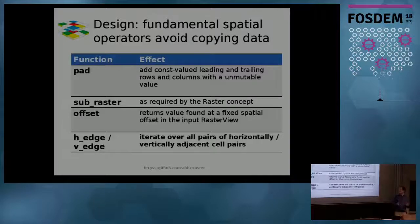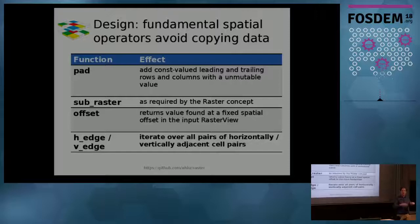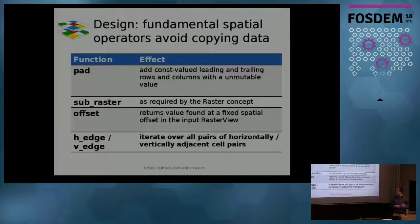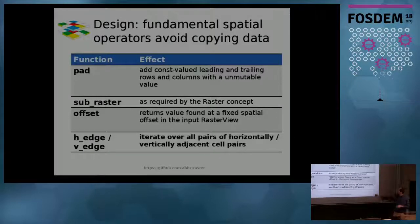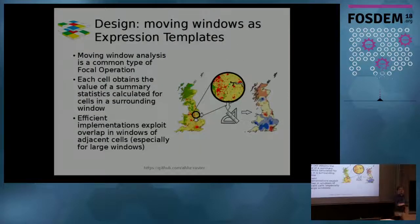There are a bunch of functions that do some kind of spatial transform that do not copy data — they are efficient by not copying data, but just by referring to data. One function is pad, which adds leading and trailing rows and columns to a dataset — you just put a frame around it, make it a bit bigger. We've got sub-raster, which I already mentioned. We've got offset, which for every cell gives you the value in another layer at the spatial offset — a few rows to the left and columns to the right. And you can iterate over pairs of adjacent cells.